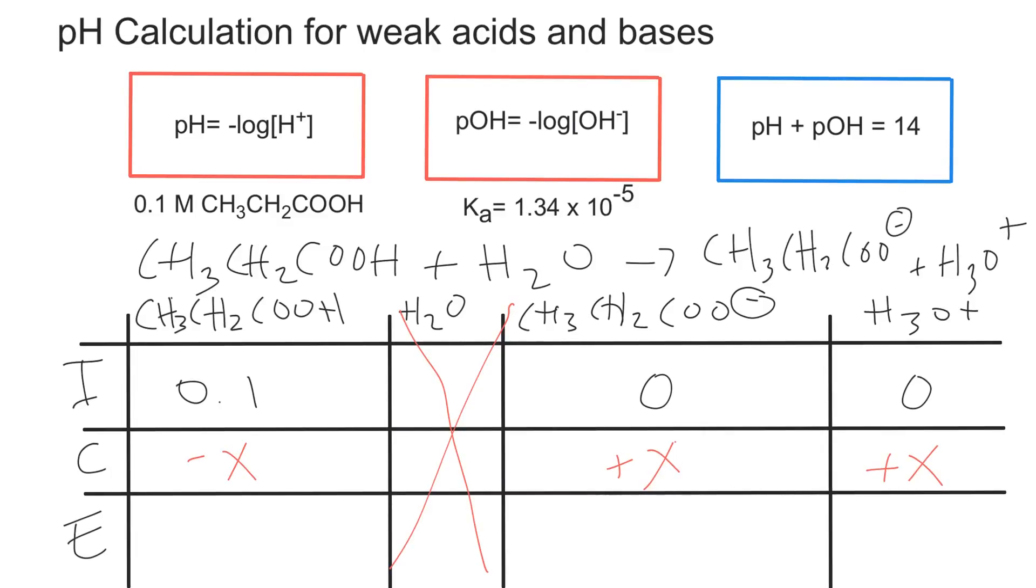That means that the amount of product that is going to go up is going to be positive x. And when we add that or subtract that depending on what part of the reaction we're in, we get to equilibrium. And we're going to get 0.1 minus x. And then for the products, we'll just get x. So now we know that the concentration of hydrogens is x. But we don't know what that x is yet.